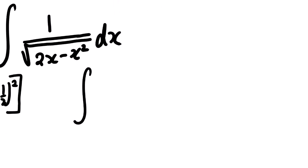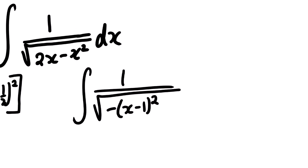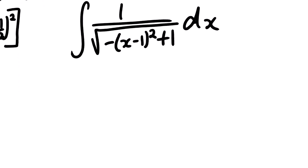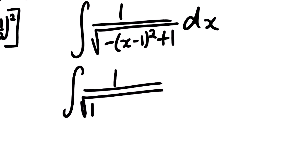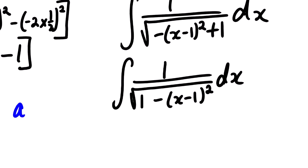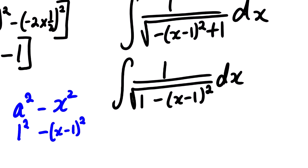From here we group the terms raised to the power 2 and distribute the negative, giving us negative x minus 1 squared plus 1. So we can rewrite this as the square root of negative x minus 1 squared plus 1 dx, which we can further rearrange as 1 minus x minus 1 squared dx. You can see that this is the form of a squared minus x squared. So the value of a is 1, and x in the formula corresponds to x minus 1.